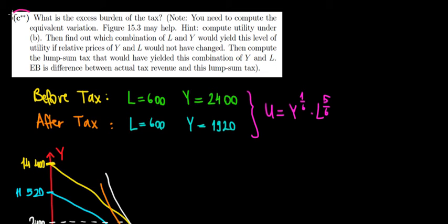Let's work on question C in this video. What is the excess burden of the tax? Before starting, let's understand the intuition of the excess burden. This proportional tax of 20% on income causes a distortion in consumption. What does that mean?